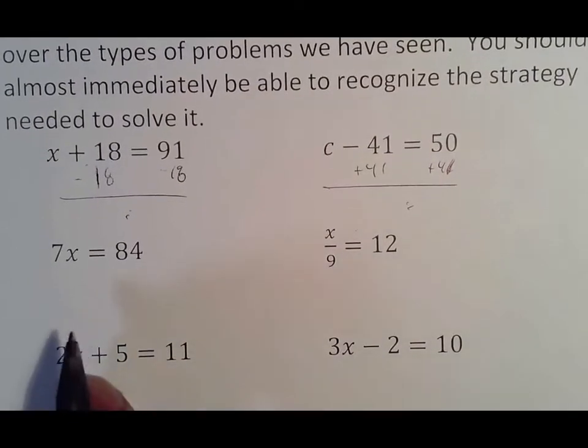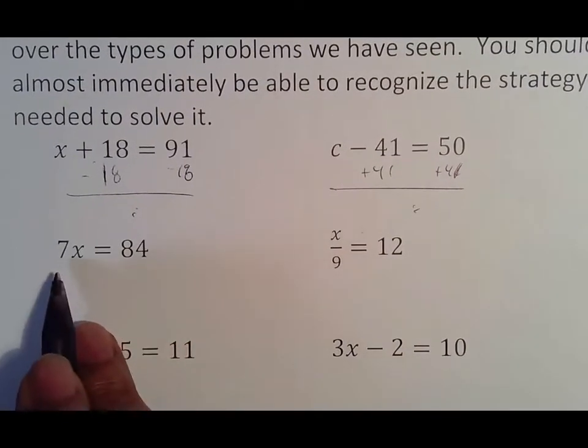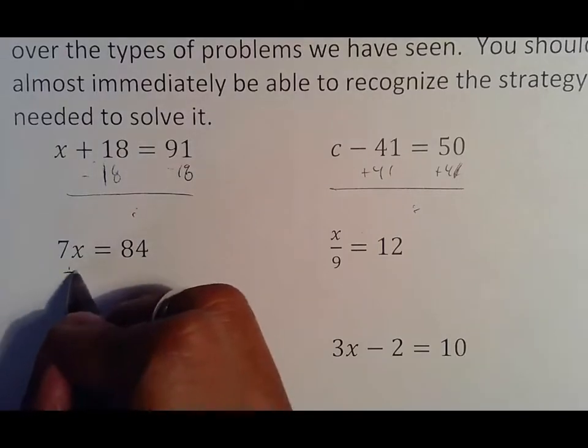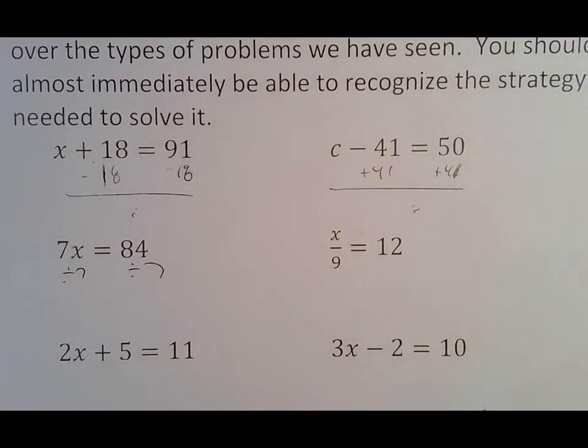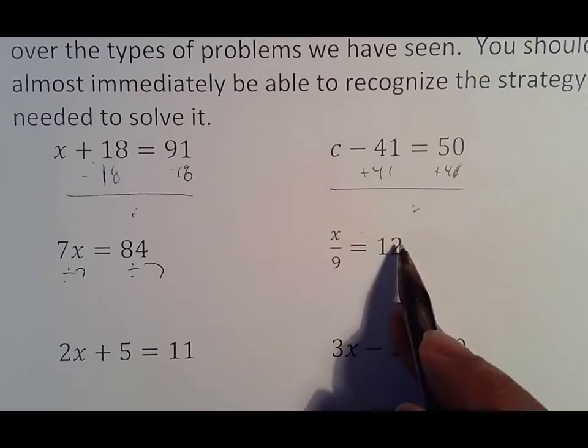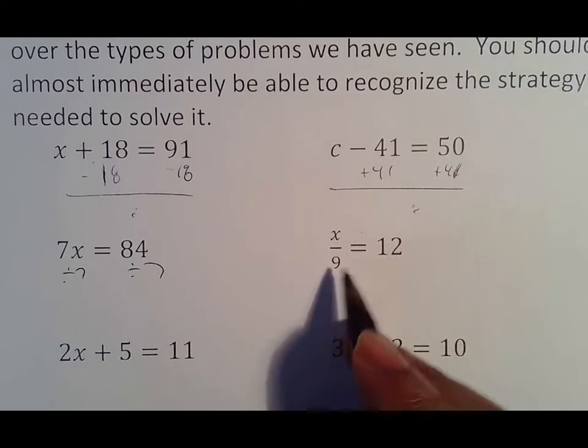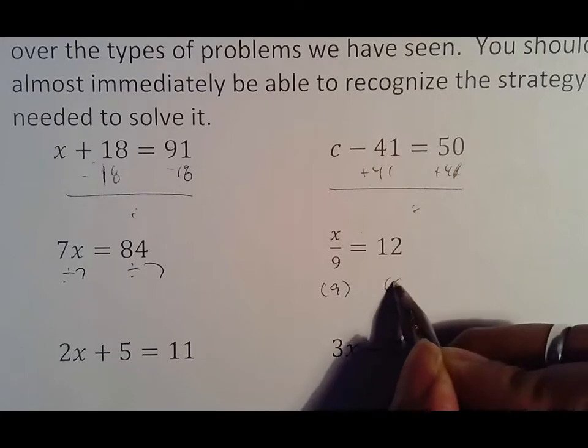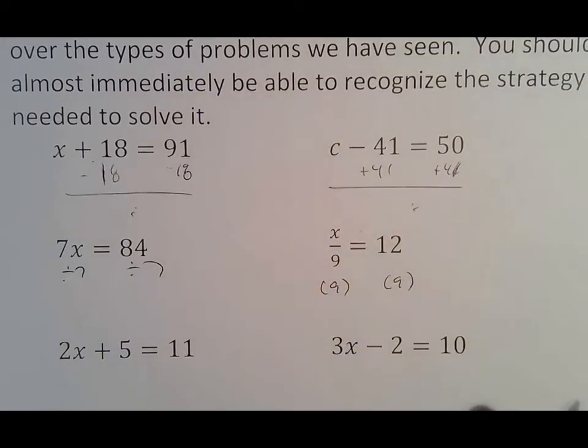If I saw 7x equals 84, I should recognize this is 7 times x, that I would divide by 7 on both sides. If I saw x over 9 equals 12, I should recognize this means divided by 9 and know that I would multiply by 9 on both sides.